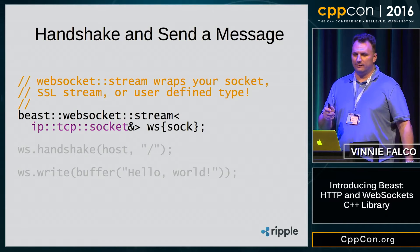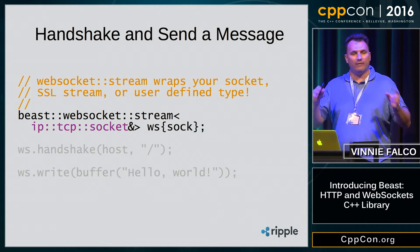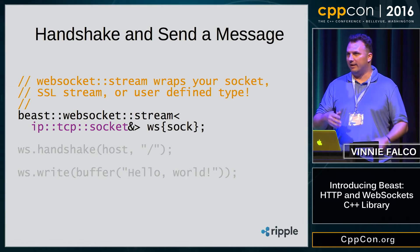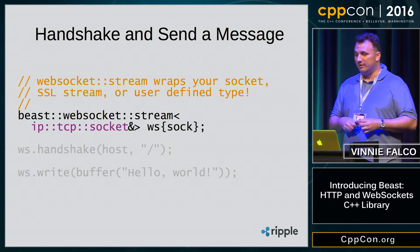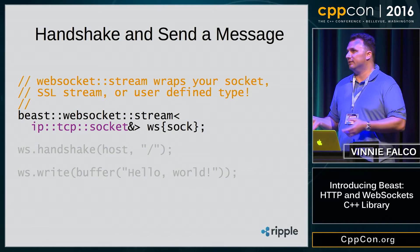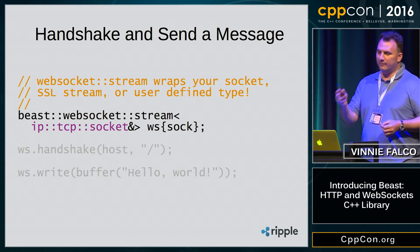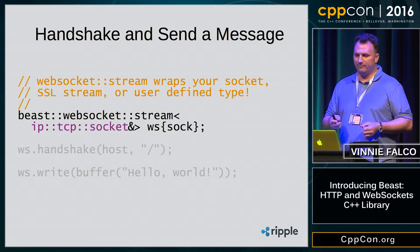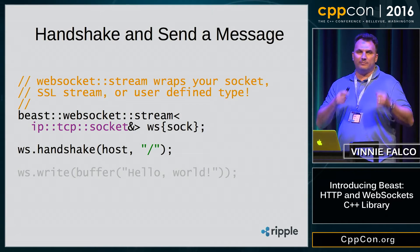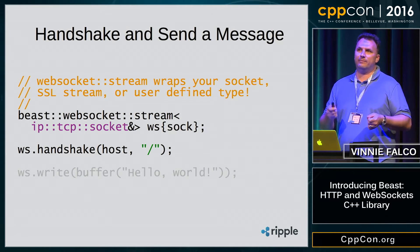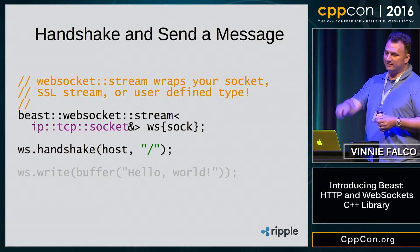Now that we have our connected socket, we create the Beast WebSocket stream, which is a wrapper around the socket. The template argument tells you the type of what it's wrapping — in this case, a non-owning reference to a socket. That could just as easily be an SSL stream, an owning reference, or even your own user-defined type that meets the requirements of a sync or async stream. We perform a WebSocket handshake, which consists of an HTTP request and response sequence — the HTTP upgrade message. Beast handles that for you.